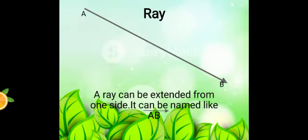A ray. A ray can be extended from one side. It can be named like A, B and upside A arrow.